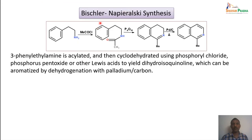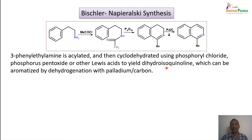In the Bischler-Napieralski reaction, 2-phenylethylamine is the starting material. It is acetylated using acid chlorides to give the acylamide. Treatment with P4O10 (the dimer of phosphorus pentoxide), phosphoryl chloride, or other Lewis acids effects cyclization, yielding a dihydroisoquinoline, which can be further aromatized to the corresponding Isoquinoline using palladized carbon.